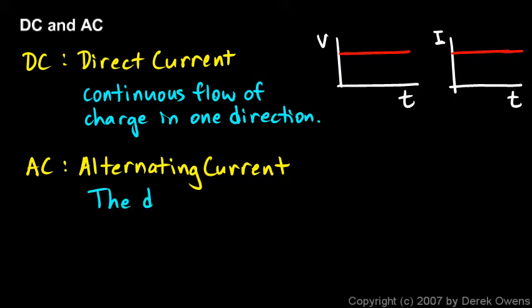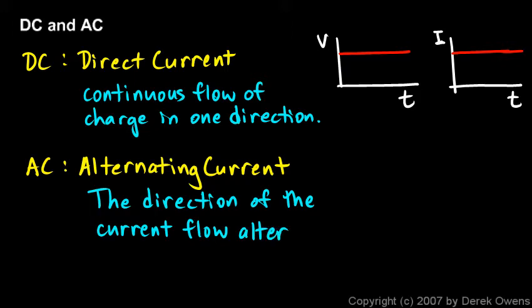reverses repeatedly. The direction of the current flow alternates back and forth, and that's obviously why they call it alternating current.